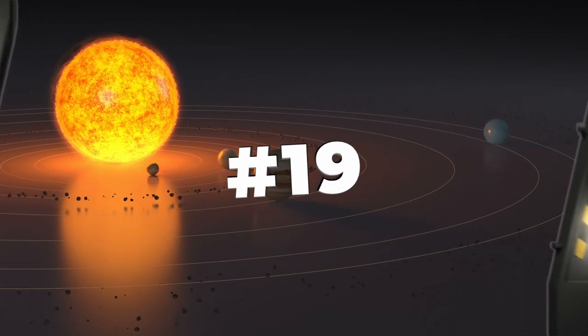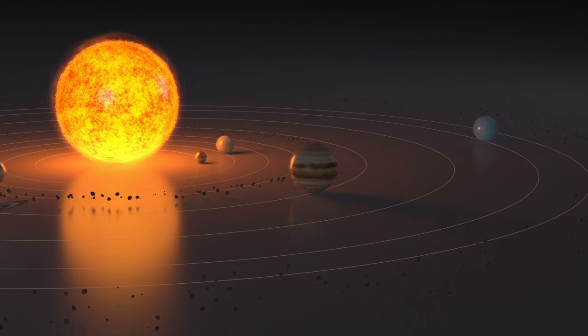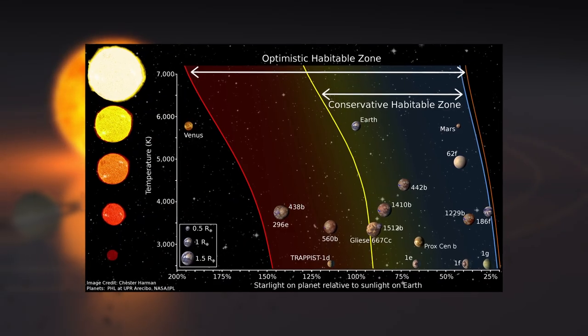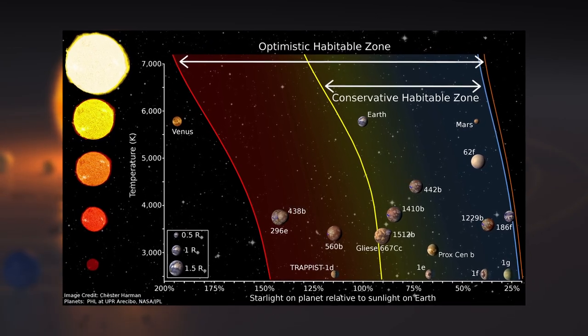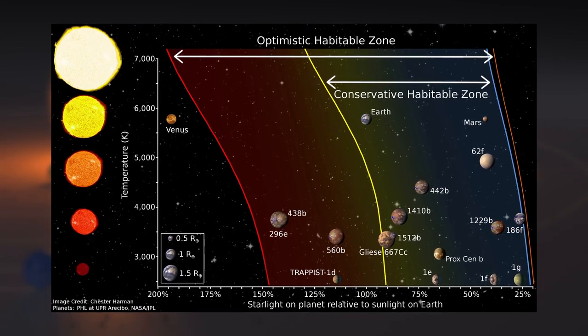Number 19. The concept of a Goldilocks zone refers to the region around a star where conditions are just right for the existence of liquid water and potentially life. Lucky for us, Earth just so happens to be in that zone.